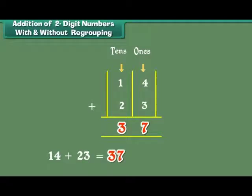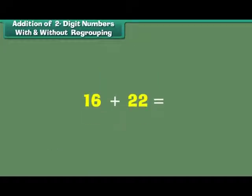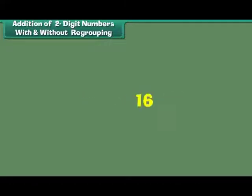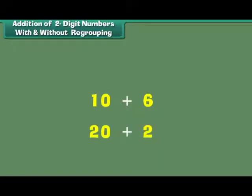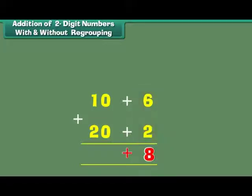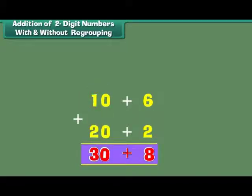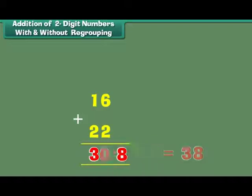We can also add two 2-digit numbers through regrouping. What is 16 plus 22? 16 can be written as 10 plus 6. 22 can be written as 20 plus 2. 6 plus 2 is equal to 8. 10 plus 20 is equal to 30. 30 plus 8 is equal to 38. Therefore, 16 plus 22 is equal to 38.